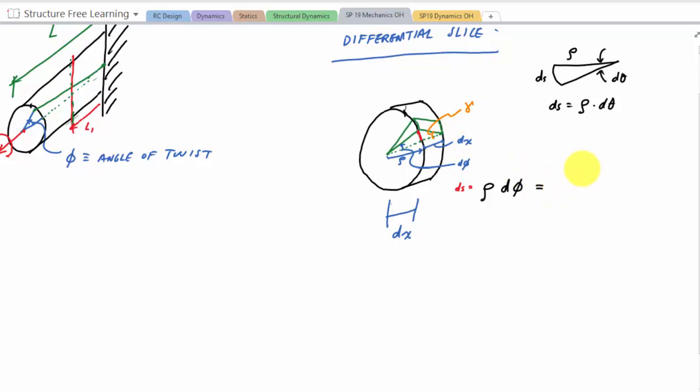So here I could say that this segment, if I call that ds, that ds is equal to rho times d-phi, which is equal to gamma, the shear strain, which is just an angle, gamma times dx. And then here this d-phi would be gamma over rho times dx.